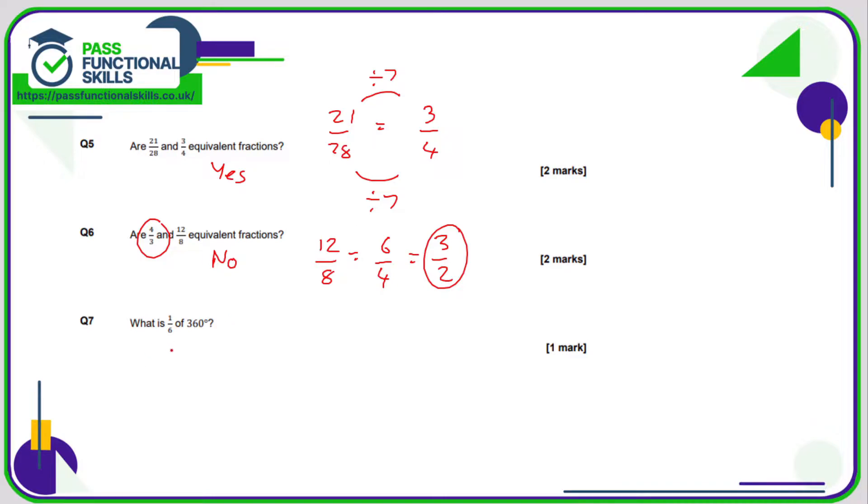Question seven: we can use a calculator. One sixth of 360 is 360 divided by six, which you can maybe do in your head. 36 divided by six is six, so 360 divided by six is 60 degrees. But use a calculator if you need it.